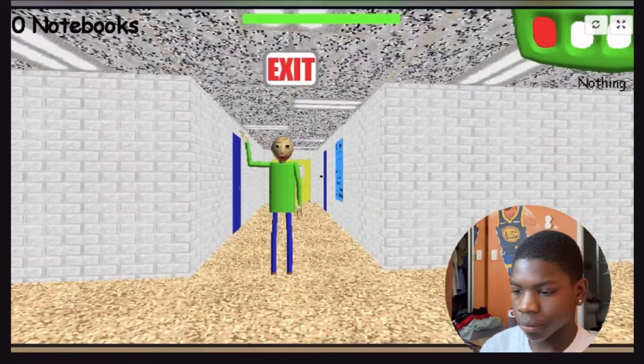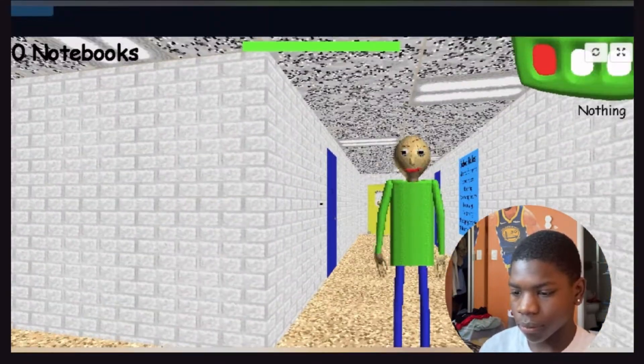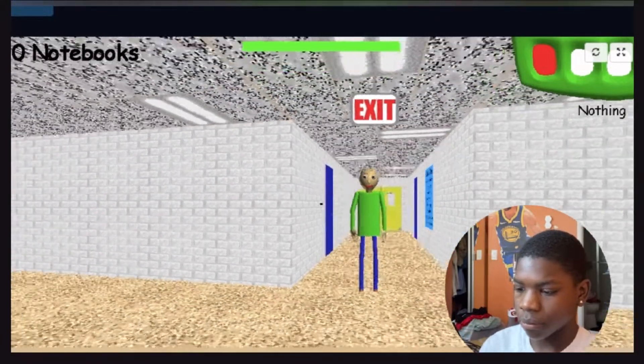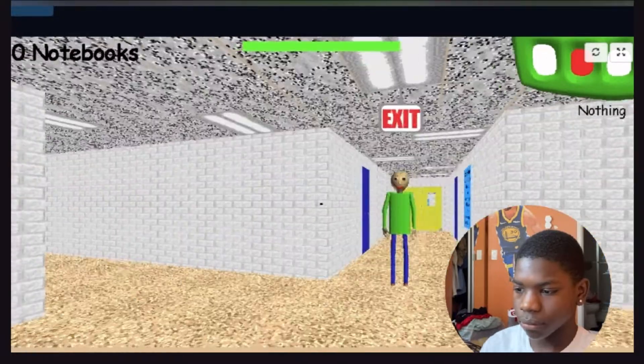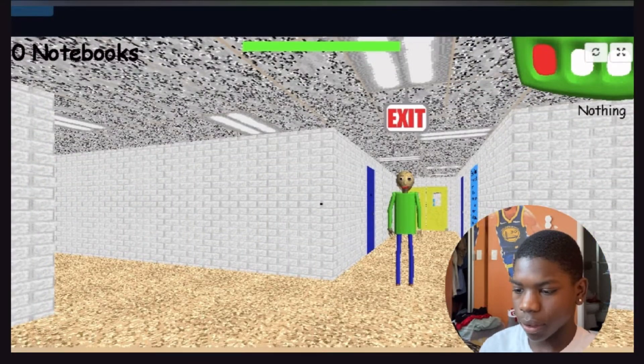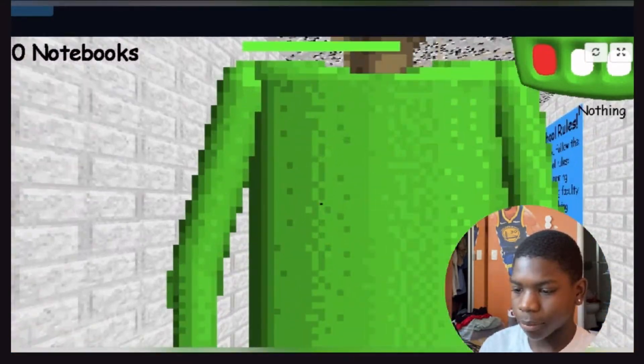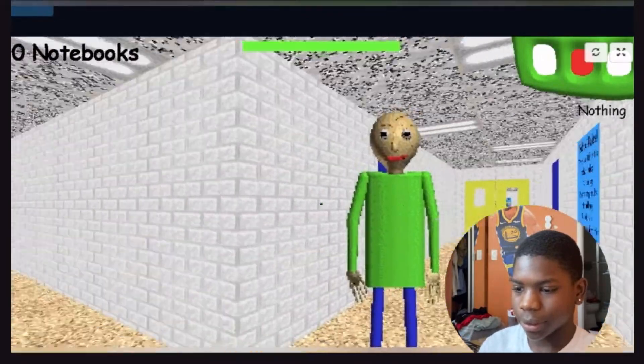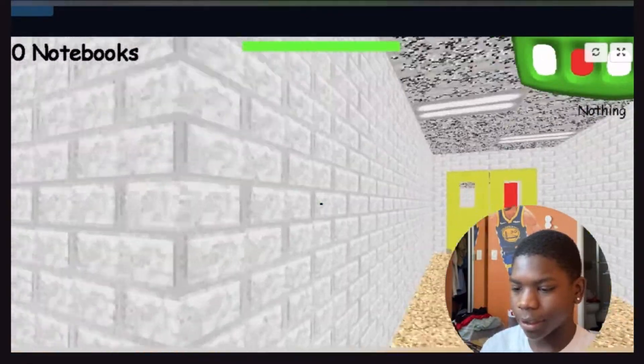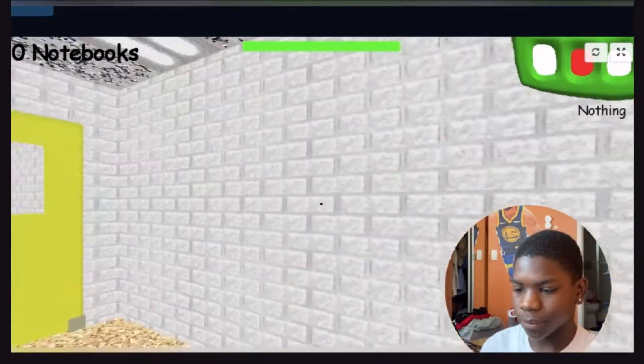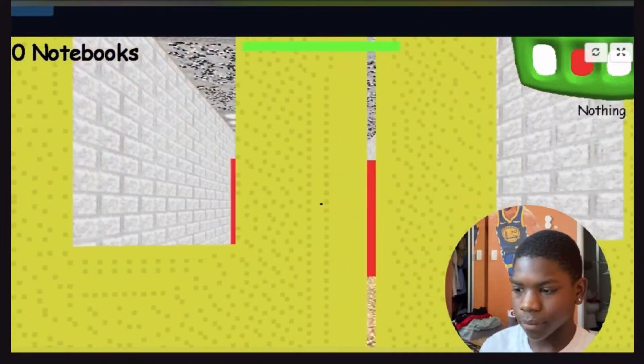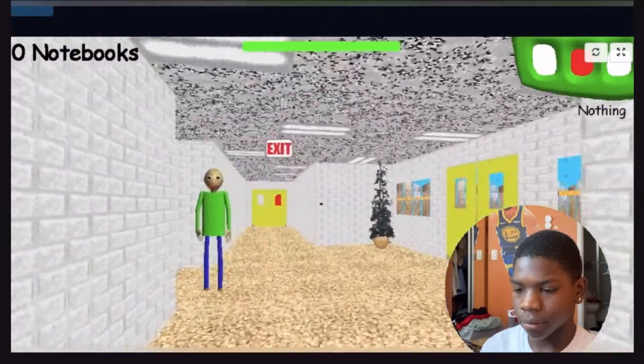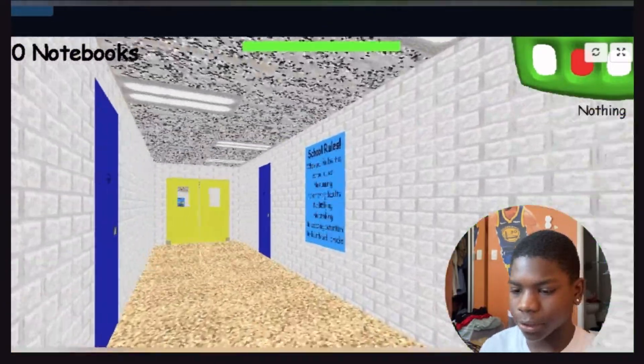Oh hi, welcome to my schoolhouse. Okay, what's up Bobby. Sensitivity is kind of fast. You need to collect two notebooks. You need to collect two notebooks or you can use these doors.